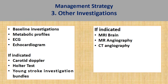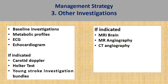This slide gives an overview of the investigations to carry out at presentation and some tests to consider later depending on clinical context. First, we perform baseline investigations and metabolic profiles including sugar and lipid profiles. We order an ECG to exclude atrial fibrillation, which is the main cause of cardioembolic stroke. Echocardiogram assists in excluding cardioembolic stroke from an intracardiac thrombus. Other investigations include carotid Doppler if there is suspicion of carotid artery stenosis, and a Holter test if paroxysmal atrial fibrillation is suspected.